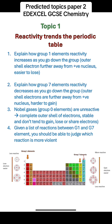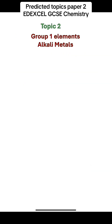Given a list of reactions between group 1 and group 7 elements, you should be able to judge which reaction is more violent. The reaction with the more reactive group 1 element or more reactive group 7 element will be more violent.